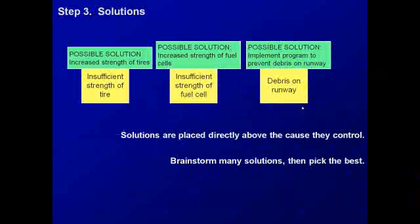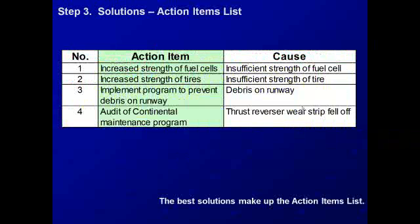Once we have developed the cause and effect relationships, we can come up with some possible solutions. Some of the possible solutions mentioned in the BEA investigation were to increase the strength of the tires and the fuel cells, and to implement a program to prevent debris on the runway. Solutions should be placed directly above the cause they control. You should brainstorm as many solutions as possible, then pick the most effective solutions for your organization and implement those using an action plan. The action items related to the causes discussed include increasing the strength of the fuel cell and tire, implementing a program to prevent debris on the runway, and an audit of the Continental maintenance program.